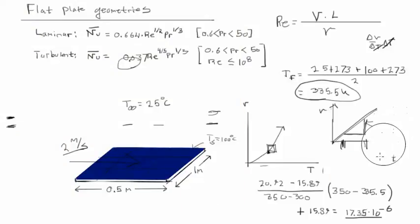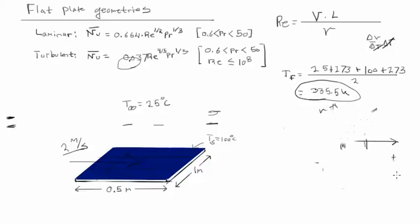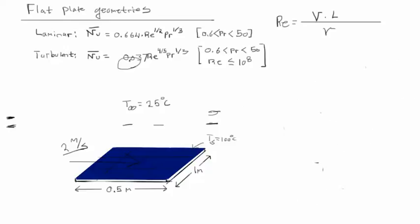All right, let me make some room here. So we have the kinematic viscosity for the fluid we're working with, the average value. And if we take a velocity of 2, the characteristic dimension of 0.5, and a kinematic viscosity of 17.35 times 10 to the minus 6, we are going to get a Reynolds number of 5.8 times 10 to the 4.